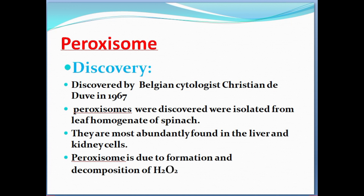The first peroxisome was isolated from a leaf homogenate. They are mostly found in the liver and kidney cells. Their main role is detoxification.